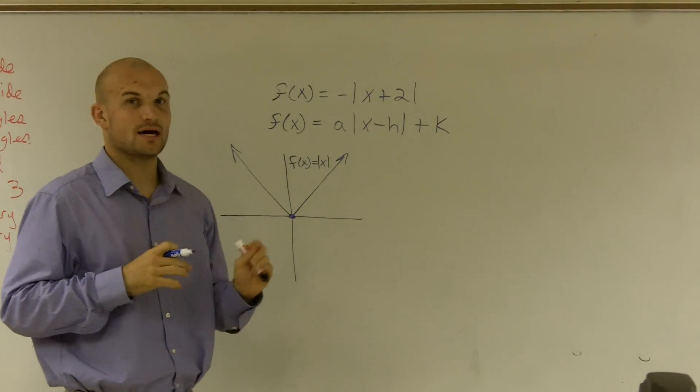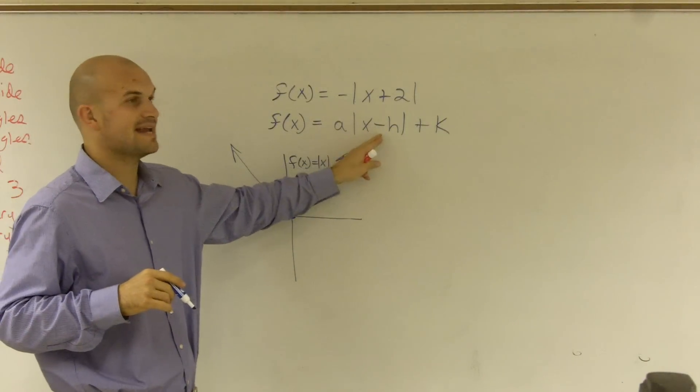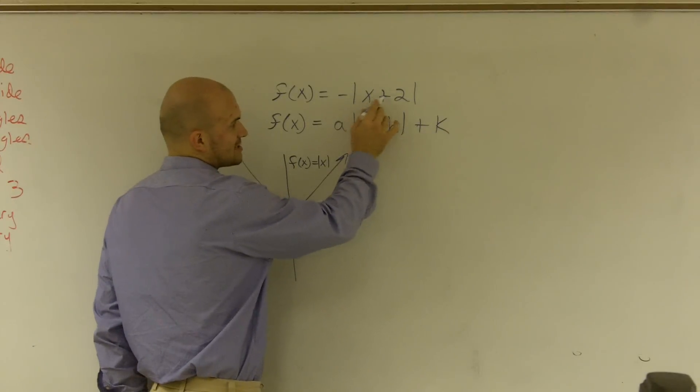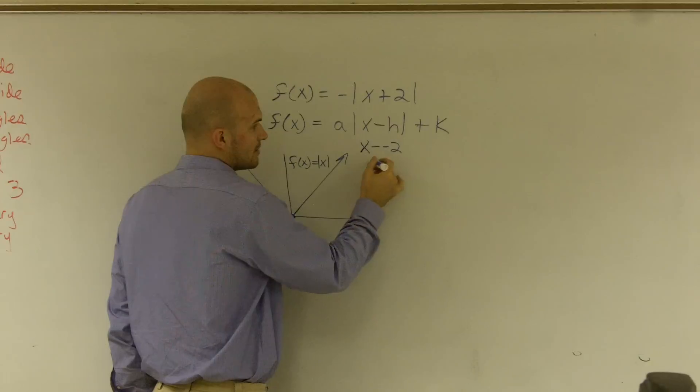My 'h' is going to tell me if it's going to shift to the right or shift to the left. Now, be careful. It's x minus h. So if I had, see here, it's x + 2, which could be the same thing as x minus a negative 2. Therefore, my h would equal negative 2.